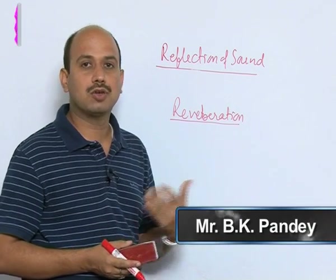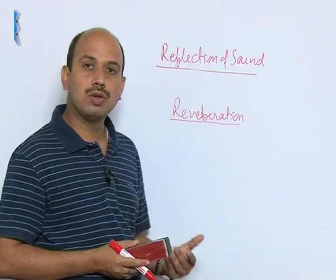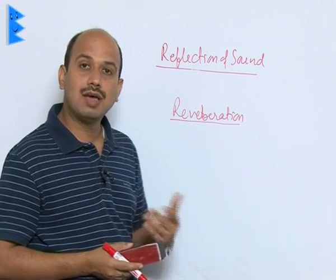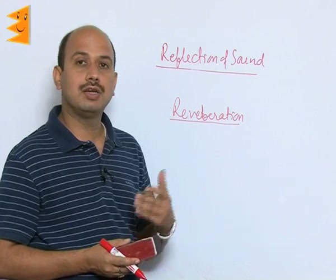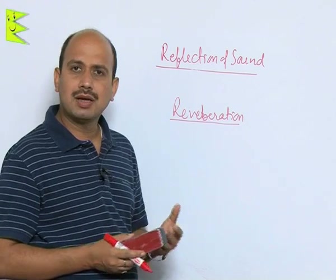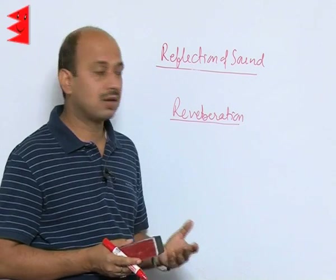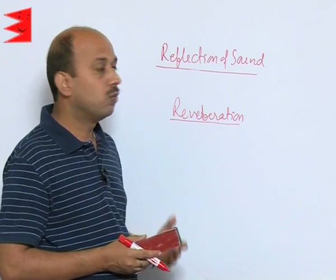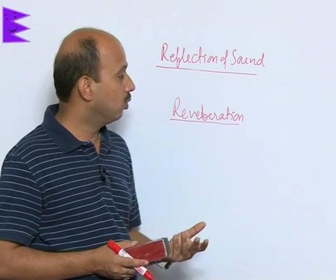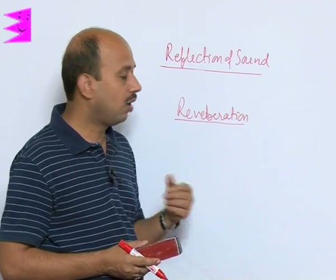Due to this repeated reflection of sound, sound persists for some time in the auditorium — that is known as reverberation, and it is undesirable. We can reduce this by carpeting the floors, by making rough surfaces or rough walls, or by using fiber boards. So reverberation is also due to repeated reflections of sound.